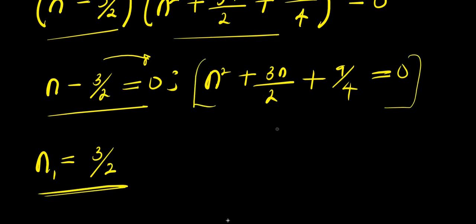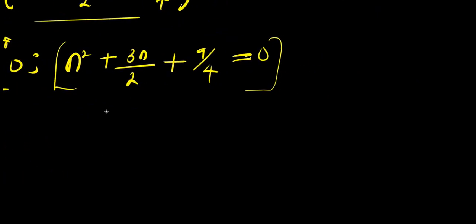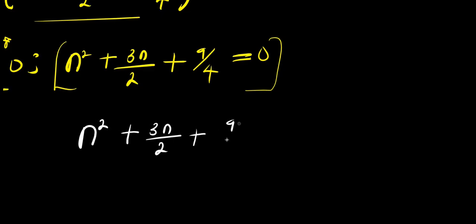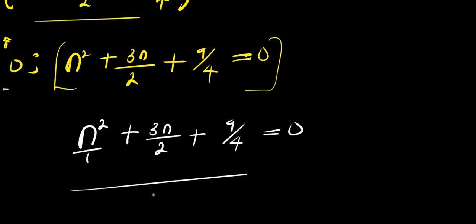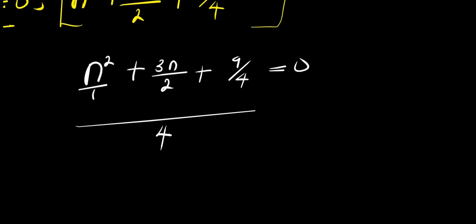The second factor gives us a quadratic equation to solve for the other values of n. We rewrite n² plus 3n/2 plus 9/4 equals 0. The LCD is 4, so multiplying through: 4n² plus 6n plus 9 equals 0.